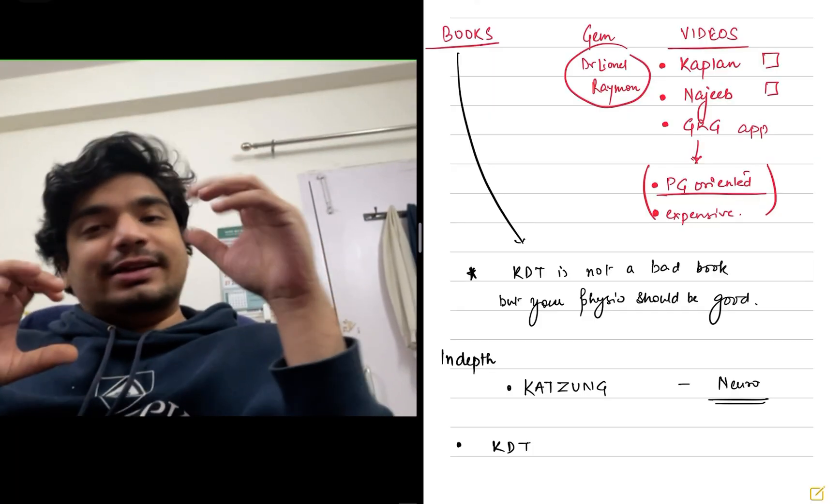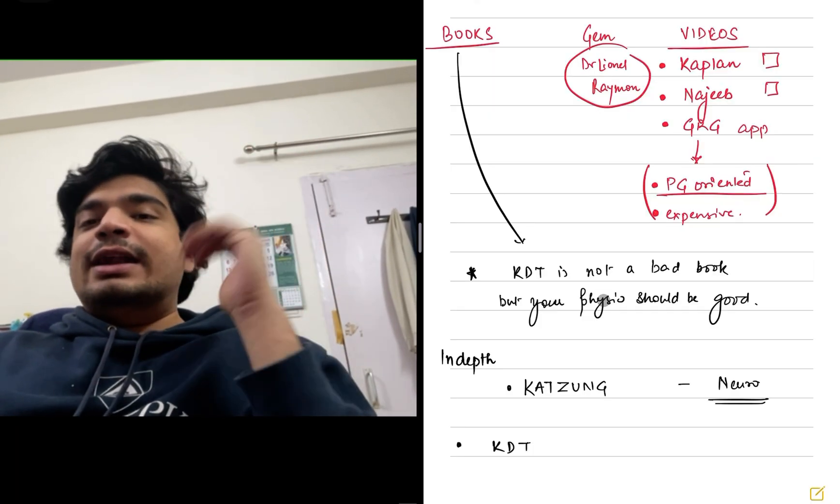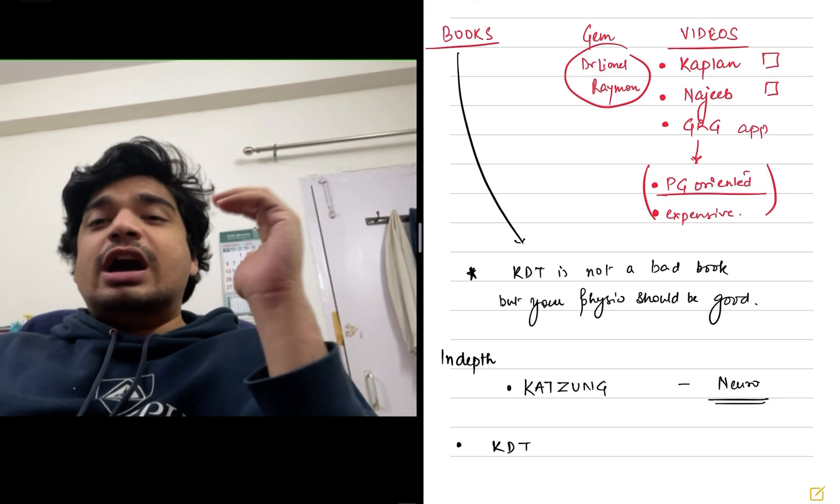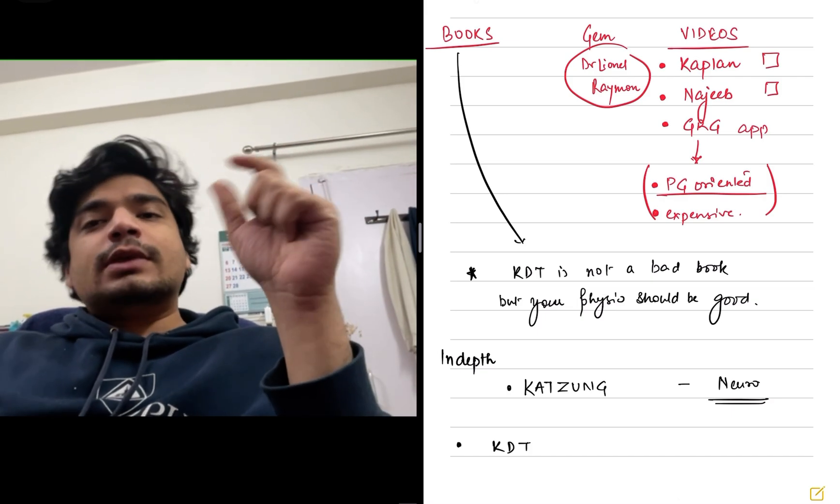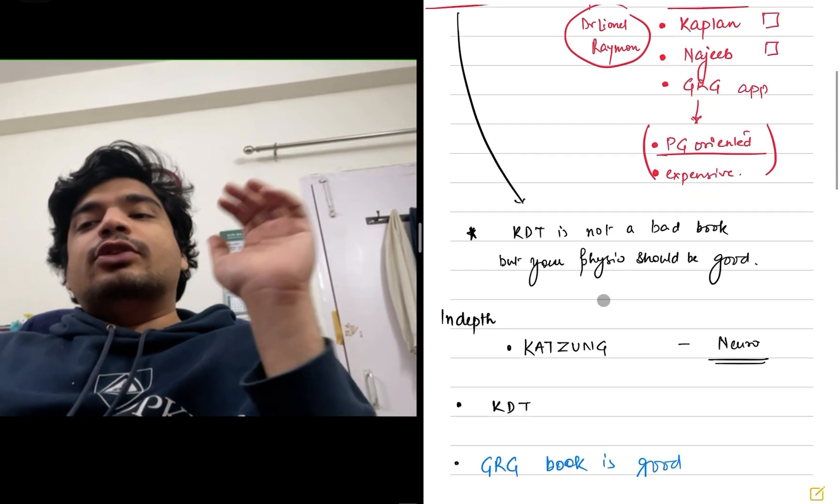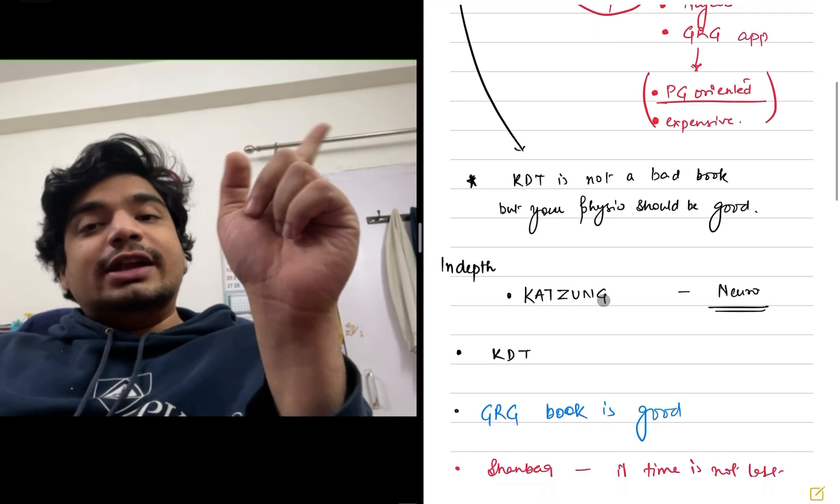If you want to go for an in-depth, the Moti Katzung, the big Katzung is a go-to book. Having said that I just use big Katzung as far as neuropharmacology is concerned. Otherwise, too huge to be done. There's a Kaplan, there's a Katzung review as well, which you can consider.